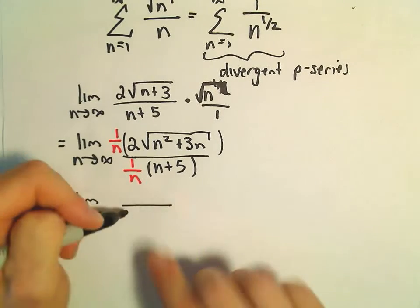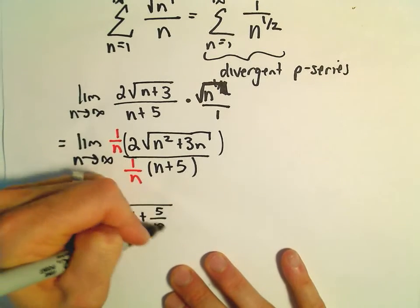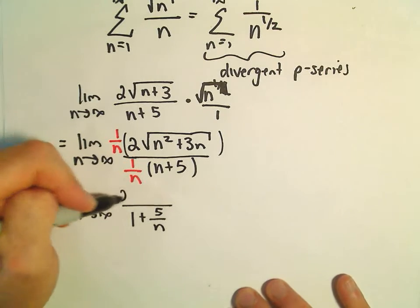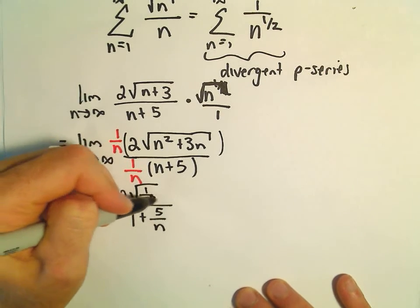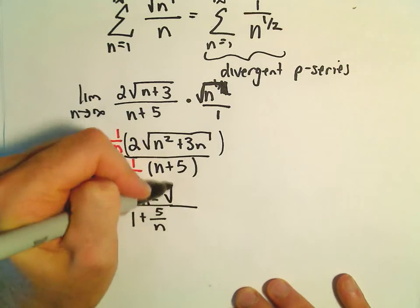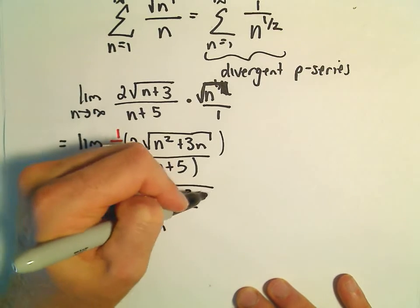So in the denominator, no problem, we would have 1 plus 5 over n. So again, I'm going to rewrite the 1 over n as 1 over n squared. Then we still have the square root of n squared plus 3n.